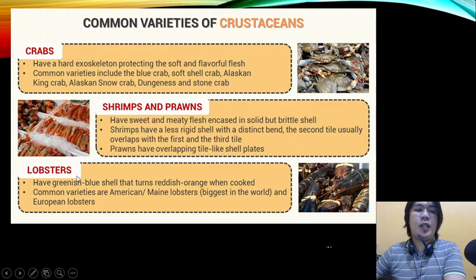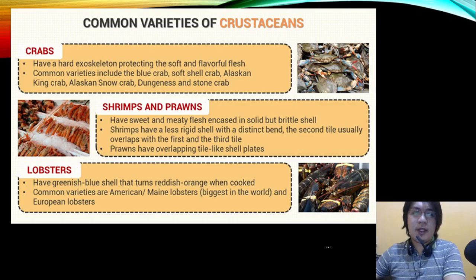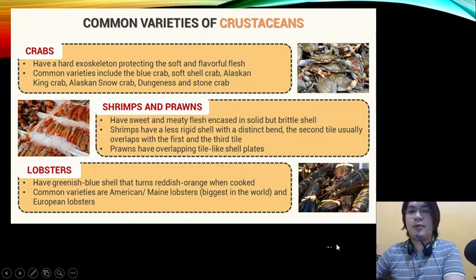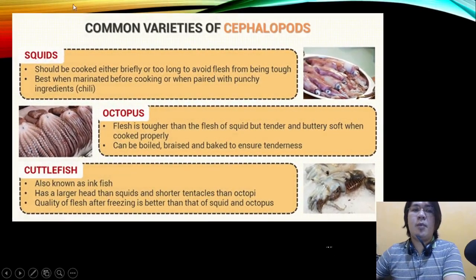Lobsters have a greenish-blue shell that turns reddish-orange when cooked. Common varieties are American or Maine lobsters, among the biggest in the world, and European lobsters. Common varieties of cephalopods include squid, octopus, and cuttlefish.